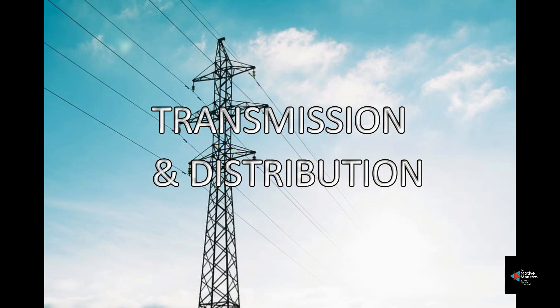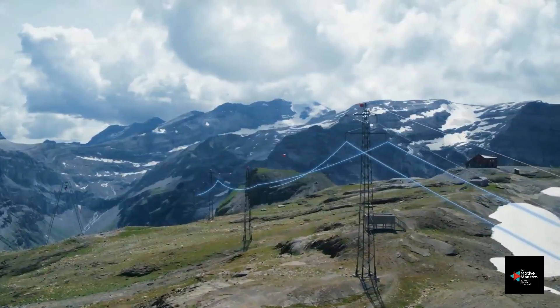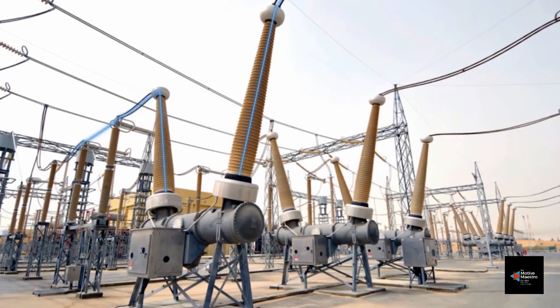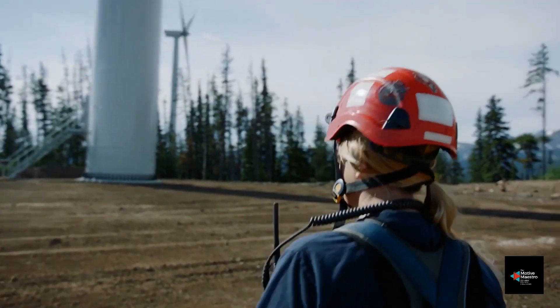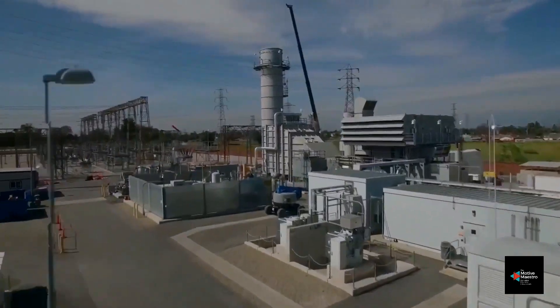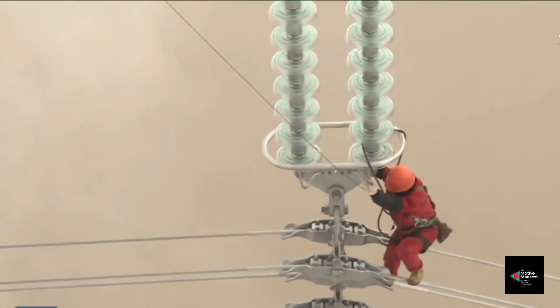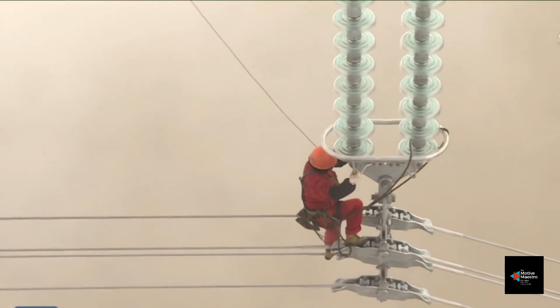After generation, the next step is transmission and distribution. Transmission and distribution refers to the different stages of carrying electricity over poles and wires from generators to a home or a business. The primary distinction between the two is the voltage level at which electricity moves in each stage. After electricity has been generated, a system of electrical wires carries it from the source of generation to our homes and businesses, forming what is commonly called the grid.